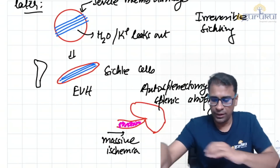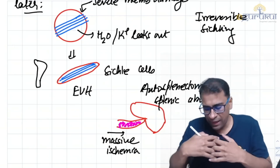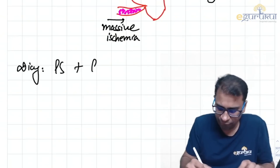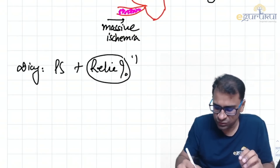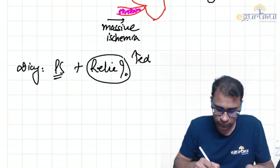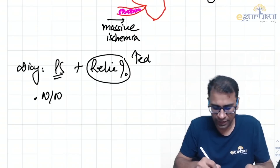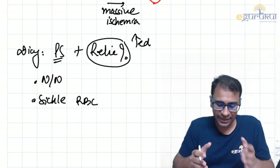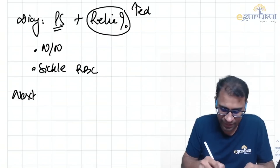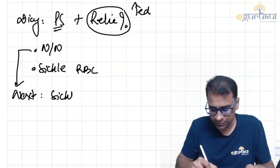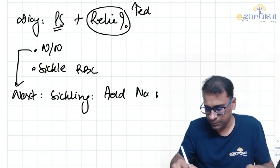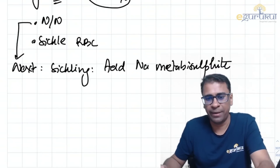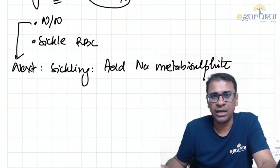For diagnosis, do a peripheral smear and reticulocyte count. The reticulocyte count is increased due to hemolytic anemia. A peripheral smear can show sickle RBCs. If the smear is normal, the next test is the sickling test, in which you add sodium metabisulfite to the sample.